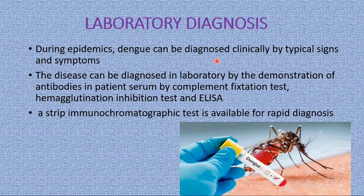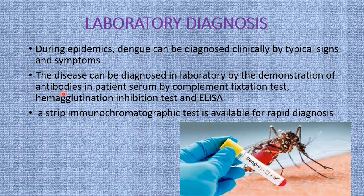Moving to laboratory diagnosis — during epidemics, dengue can be diagnosed clinically by typical signs and symptoms such as high fever, bladder problems, constant headache, eye pain (retrobulbar), severe dizziness, loss of appetite, hemorrhagic tendency with bleeding from mucus membranes or gingiva, vomiting blood, bloody diarrhea, and encephalitis. In the laboratory, the disease can be diagnosed by demonstration of antibodies in the patient's serum using tests like complement fixation test, hemagglutination inhibition test, and ELISA. An immunochromatographic strip test is also available for rapid diagnosis.